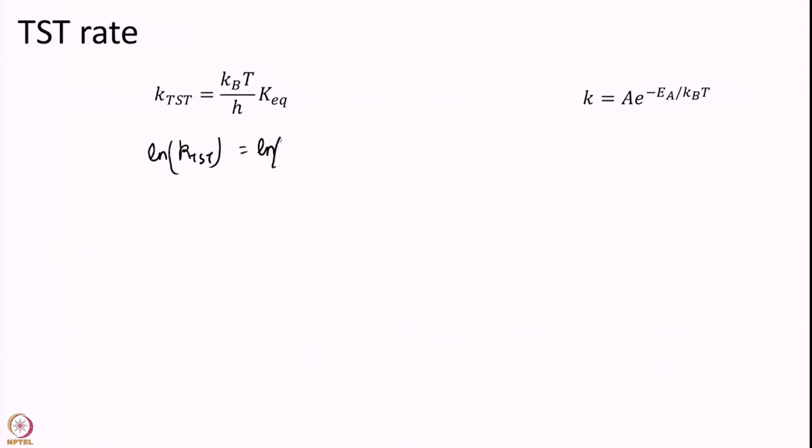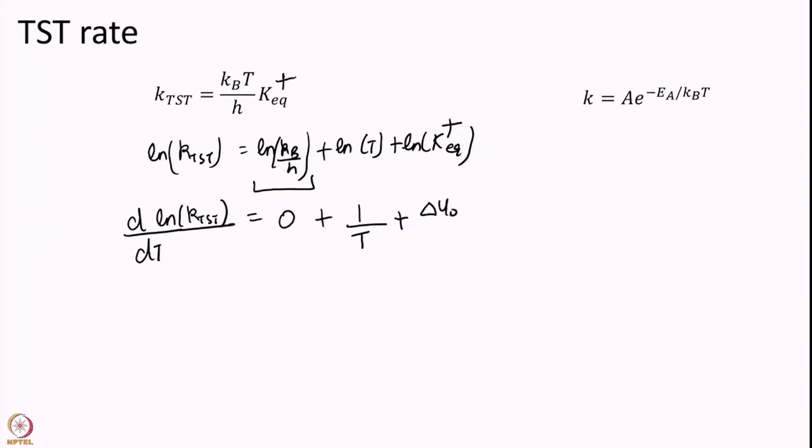This will be ln of this constant plus ln of T plus ln of K equilibrium. If I take a derivative of this with temperature well this is a constant. So, I do have 0 here. Ln of T the derivative of that is 1 over temperature. And the derivative of K equilibrium is delta U naught dagger over KT square.